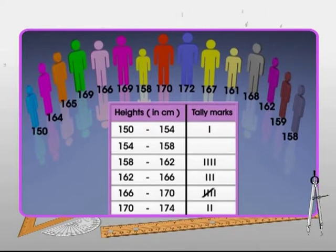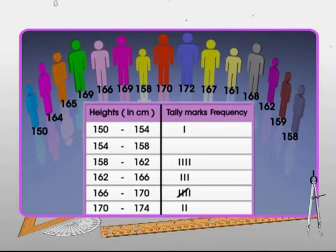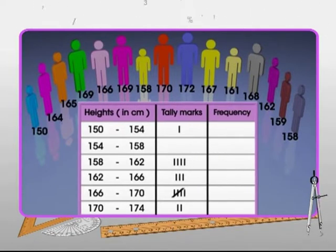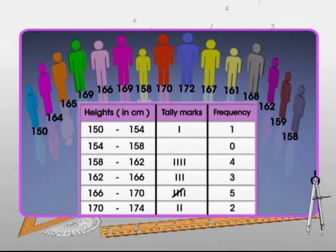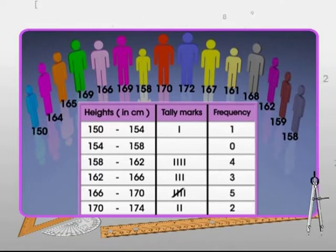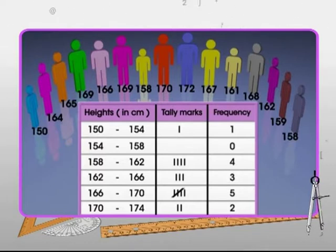Mentioning the number represented by tally marks in the frequency column. Frequency distribution thus simplifies and condenses the data, and enables us to observe certain important features at a glance.